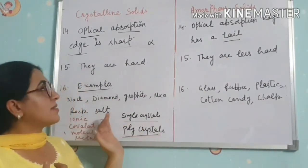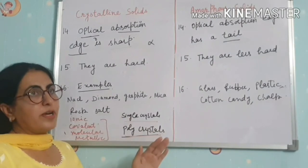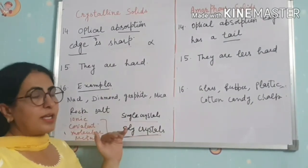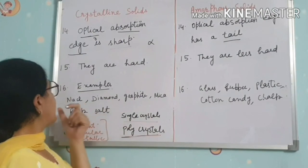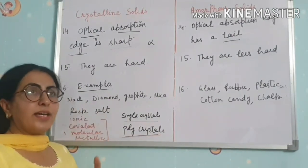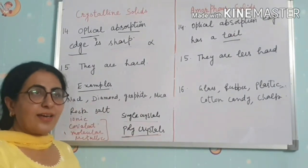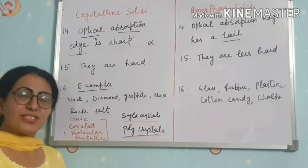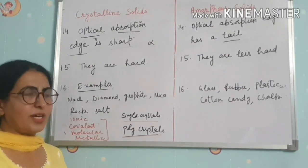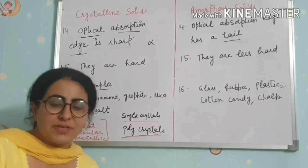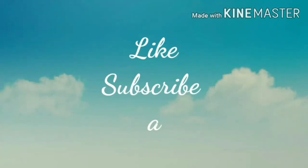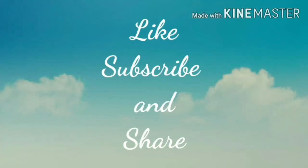So these are the 16 points of difference between crystalline solids and amorphous solids. Hope you enjoyed the lecture. The next lecture will be on crystal lattice. Thank you very much.